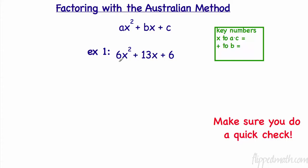Before we get too deep into it, you need to understand a few things. First, you need to have it in standard form — your highest exponent down to your lowest — so we'll always have an x squared term, an x term, and a constant c. We're going to multiply our a and our c together.